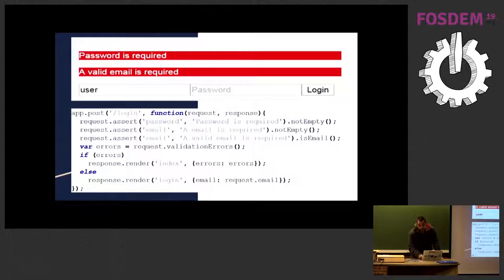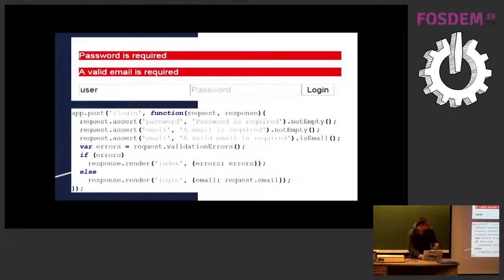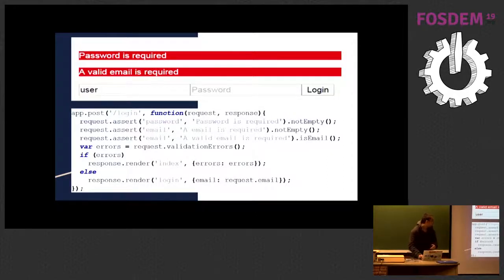Express-validator also provides additional request handlers. For example, we can use request.assert and request.validationErrors for validating required fields. For example, if we need to check an email in our application, we can use the email method for mail validation without worrying about using regular expressions. And in an easy way, we can validate our application and send that information securely to the server.